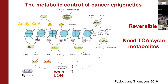Another common feature of all epigenetic modifications is that they all require small metabolites as substrates. For instance, they need acetyl-CoA for acetylation, NAD for deacetylation, and αKG for demethylation. There are other metabolites that can inhibit αKG-dependent mechanisms. So all of this can be controlled by the availability of metabolites. This is how cells use metabolism as a metabolic sensor to regulate gene expression, cell differentiation, and cell fate.